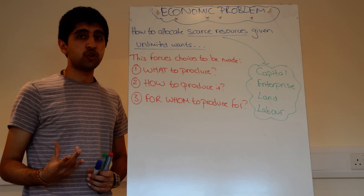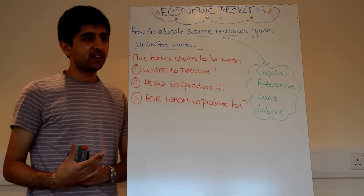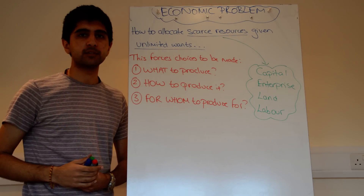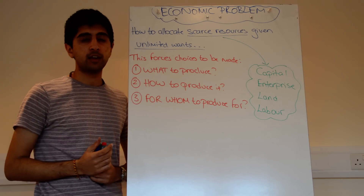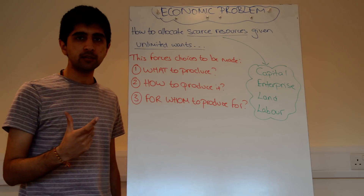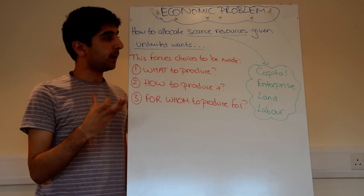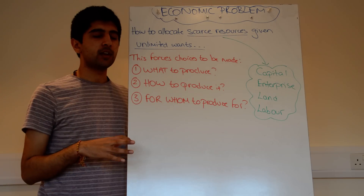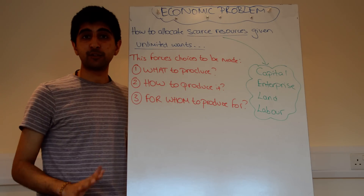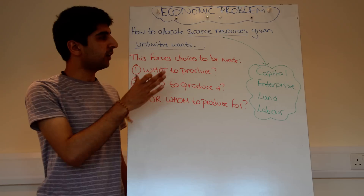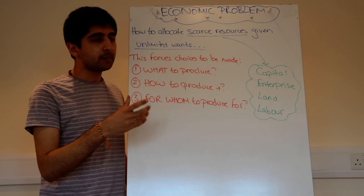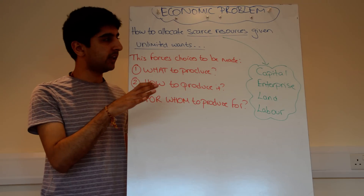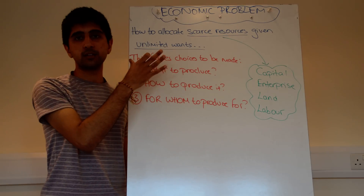You and I, as consumers, have got unlimited wants. Given the choice, we would love to have everything we possibly want to an unlimited amount, but we're constrained — constrained by money. Maybe we can't afford everything we want, but more than just that, we're constrained by scarce resources. Even if we did have an unlimited amount of money, we wouldn't be able to satisfy our unlimited wants because there simply aren't enough goods and services in the economy that can be made to satisfy our wants.